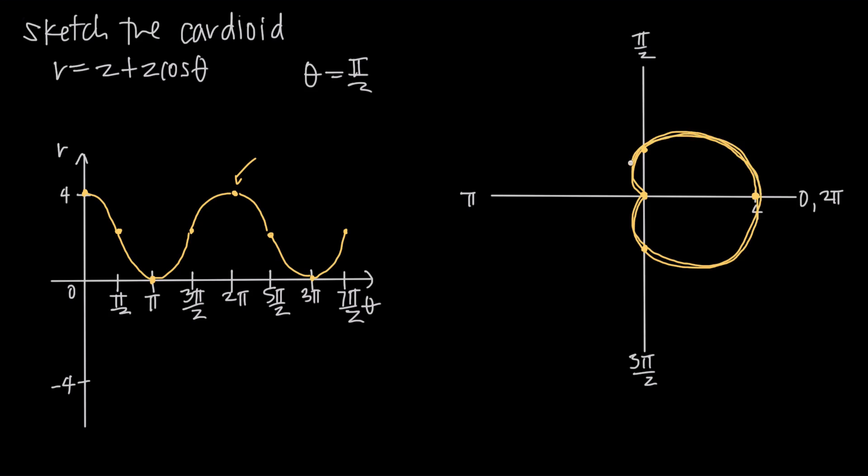And we trace the curve over and over again without drawing any new section. So that's how you sketch a polar curve when the polar curve is a cardioid.